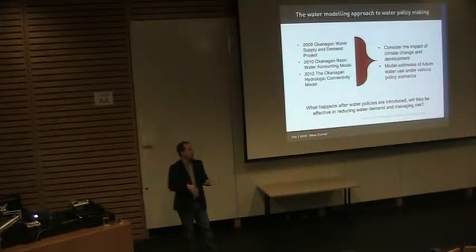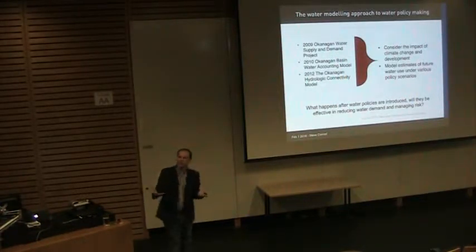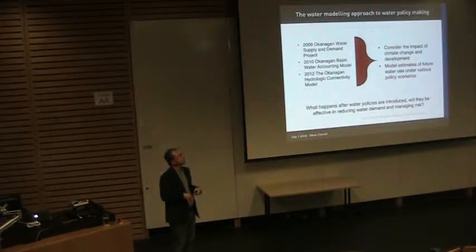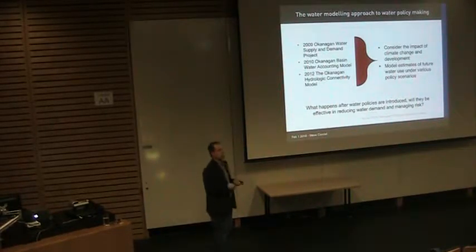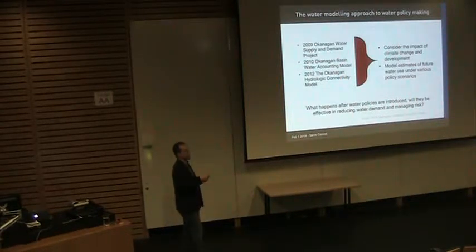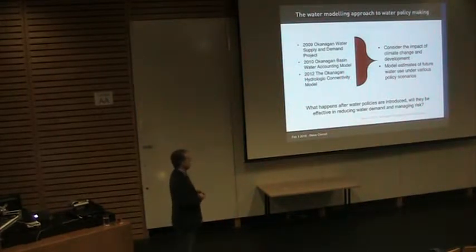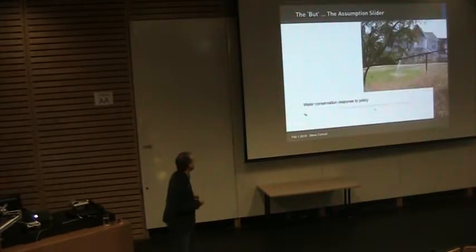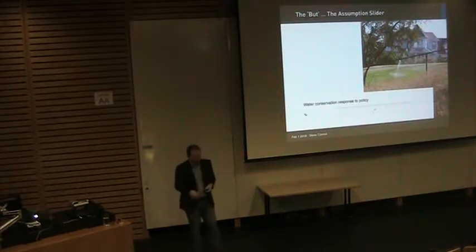The goal was to look at the impact of climate change and development, to model estimates of water use so that policies could be developed to help manage it. But one question I brought to them was: what happens after you put the policies in place? These models use historical data, but you're interested in introducing things that have never happened in the Okanagan — will the models be effective in managing water demand?